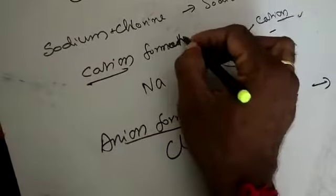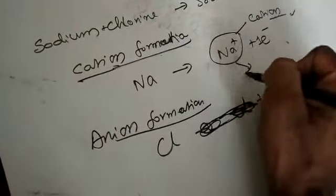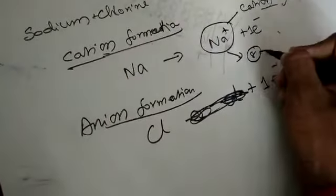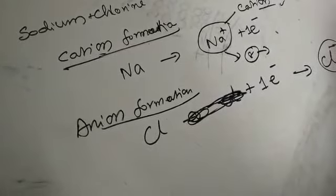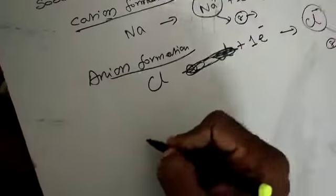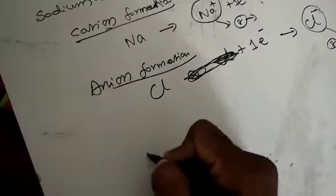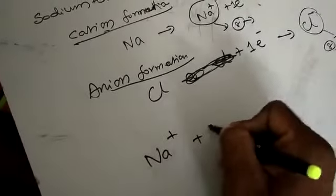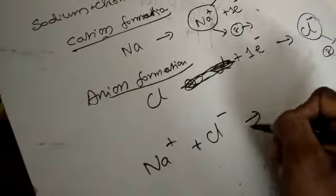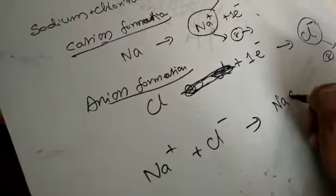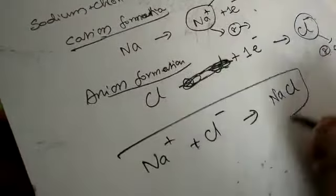Now Na+ has 8 electrons in the outer shell and Cl- also has 8 electrons in the outer shell. Now these two, cation and anion, due to electrostatic force of attraction, combine together to form NaCl. This is the way in which sodium chloride is formed.